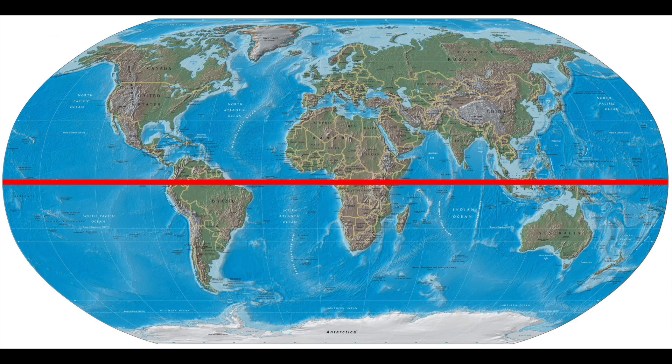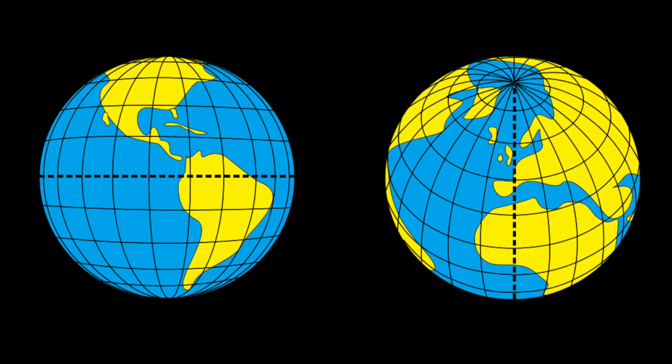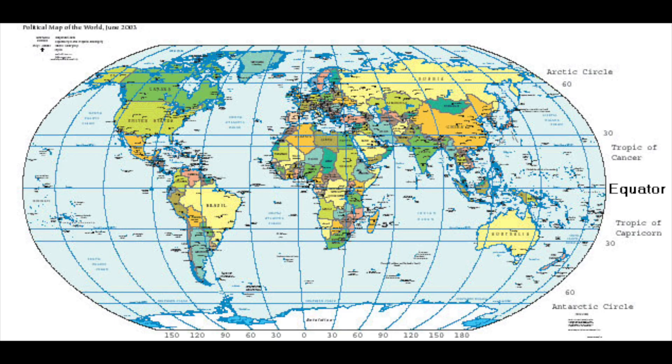Places near to the equator are a lot hotter — places in Africa, for example, are a lot hotter than the UK which isn't as near to the equator. This is due to the curvature of the earth, the angle of the sun in the sky, and the layer of atmosphere that surrounds the earth. When the sun is directly overhead its heat is concentrated upon a small area, which means that the land warms up rapidly.